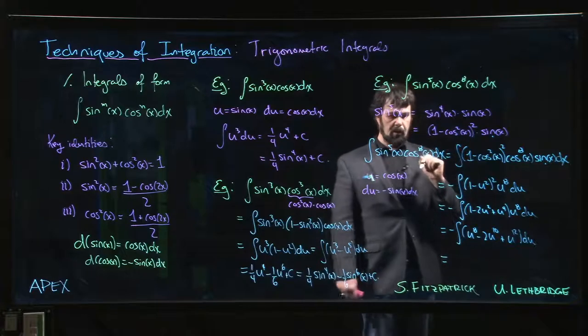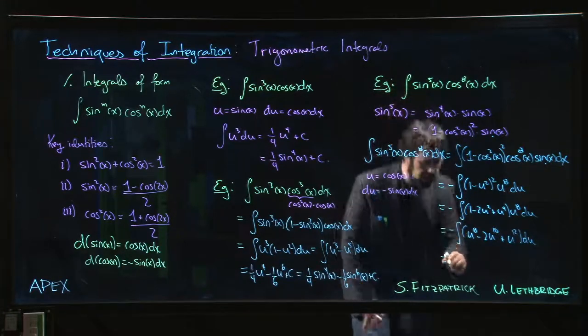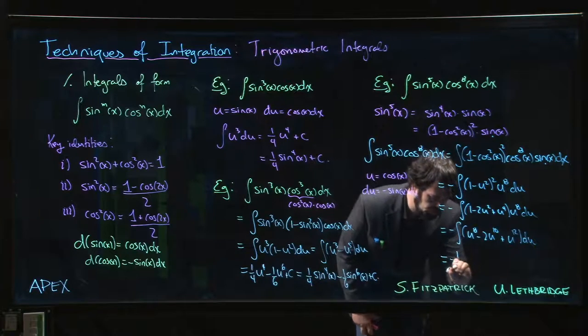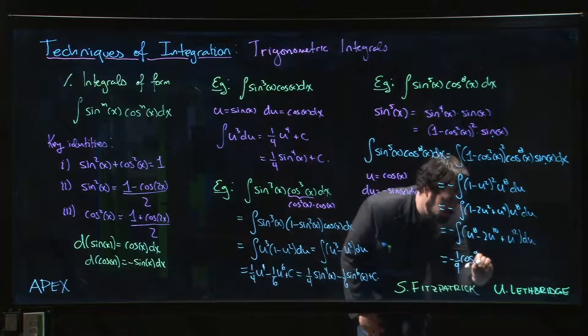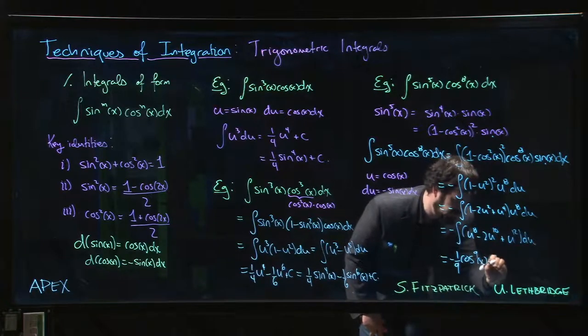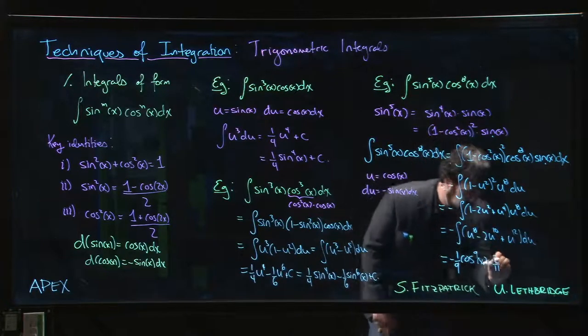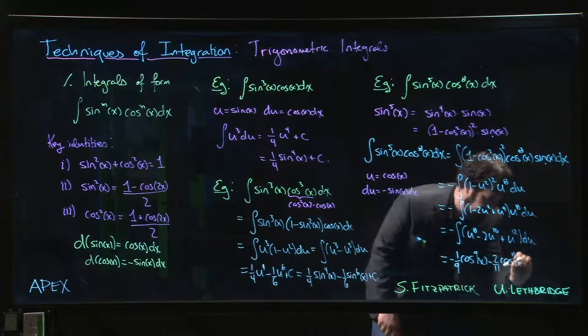So maybe I'll substitute back while I'm at it. We're going to put cosine back in, so this is going to be -1/9 u⁹, but u is cos, right? -2/11 cos¹¹.